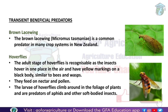Hoverflies have yellow marks on a black body, similar in appearance to bees and wasps, and they feed on nectar and pollen. The larvae of hoverflies climb around the foliage of plants and are predators of aphids and other soft-bodied insects. Hoverflies are therefore one of many predators of aphids.